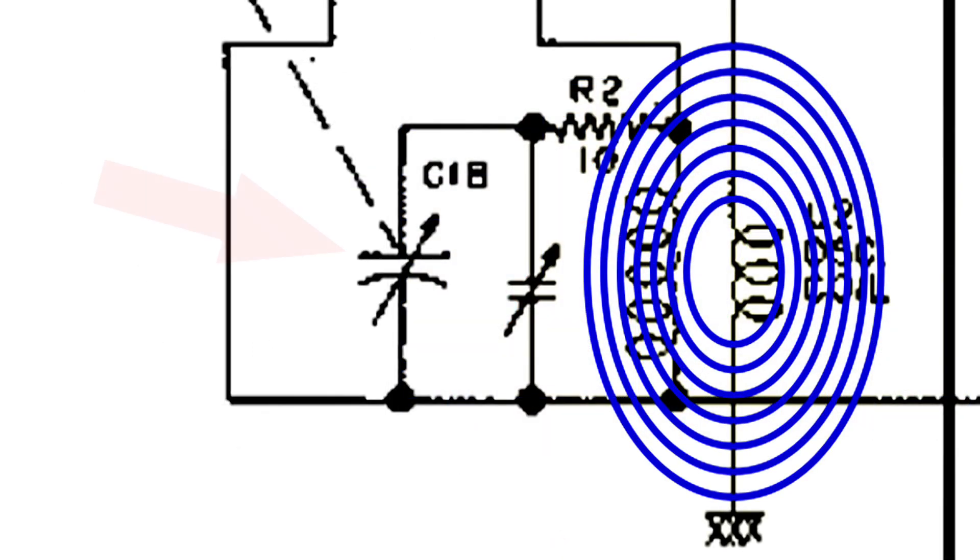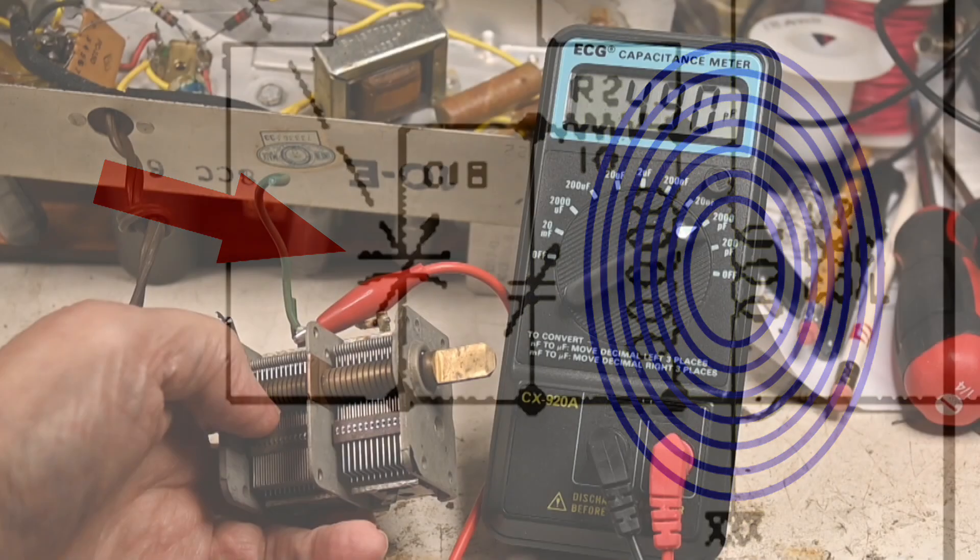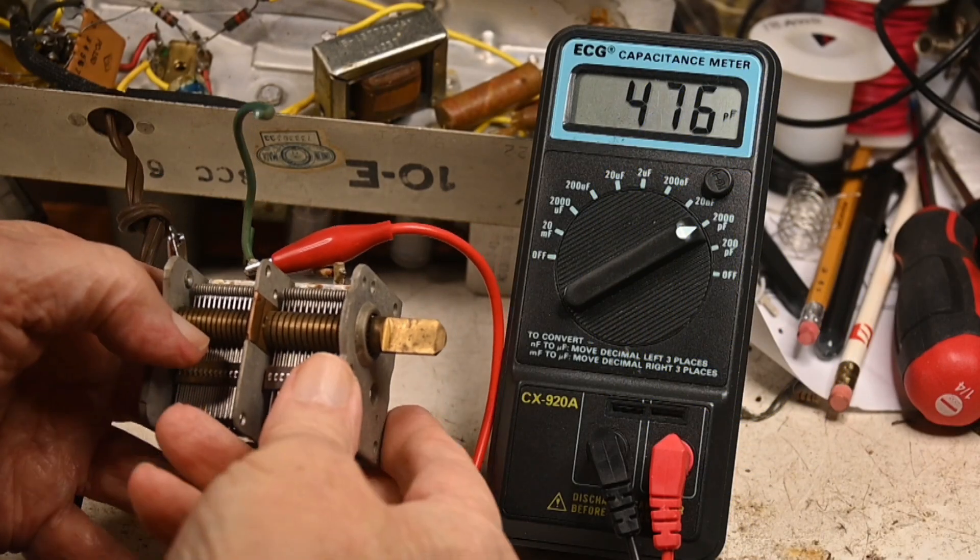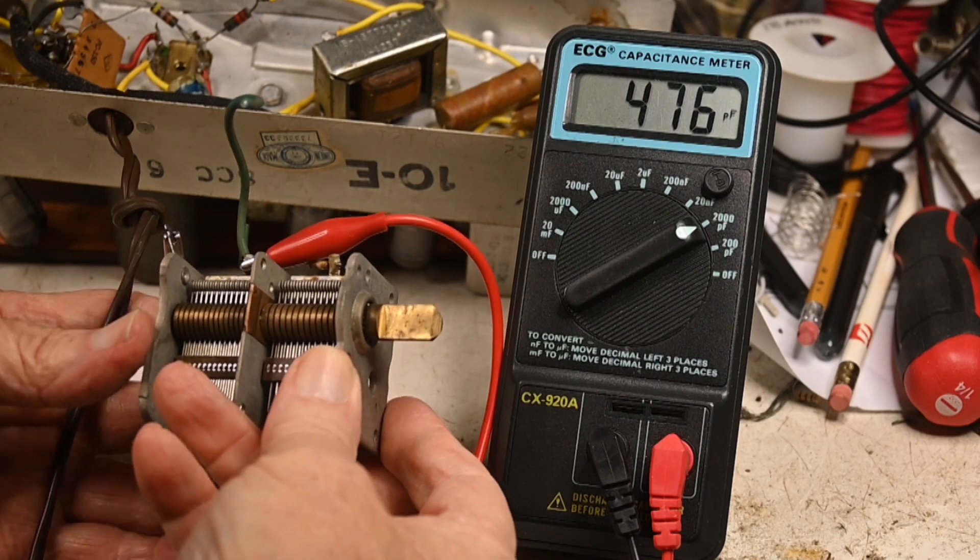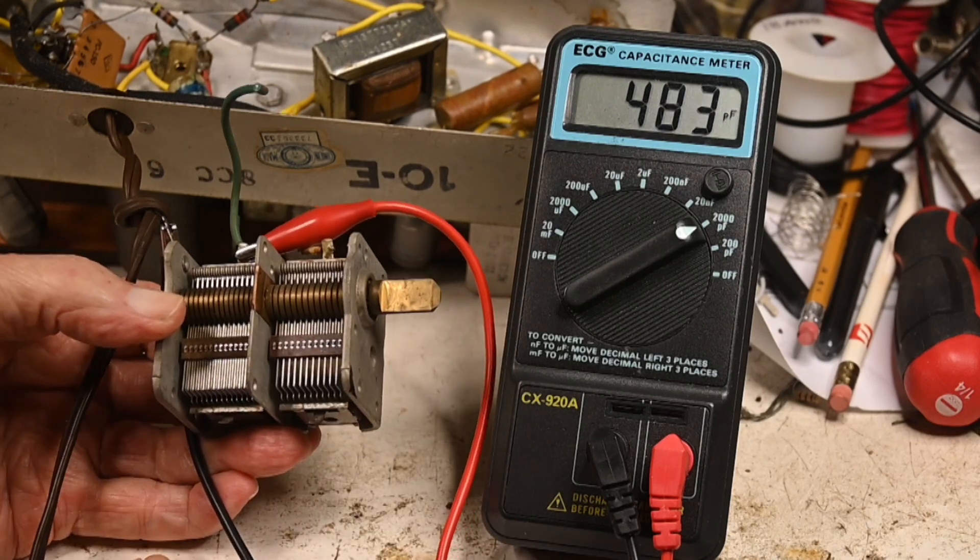Let's take a look at what this variable capacitor does in this oscillator circuit. This capacitor is part of the tank circuit. You can see that it is across the secondary of the oscillator coil.